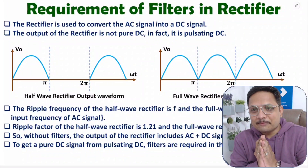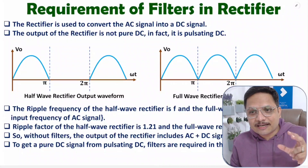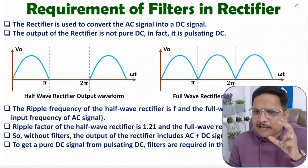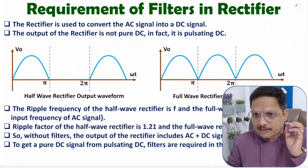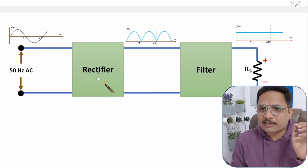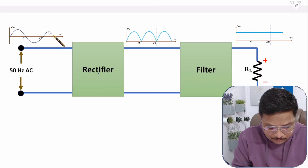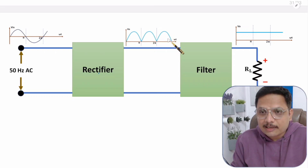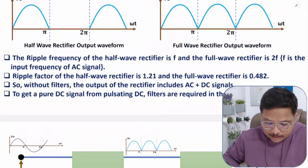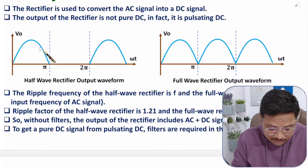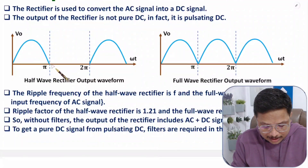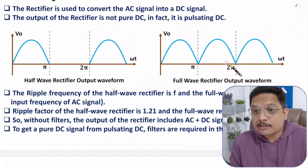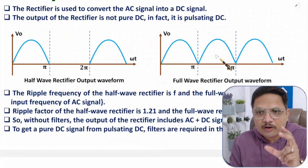Welcome to Engineering Panta Family. In this video I'll be explaining the requirement of filters in rectifiers. A rectifier's job is to convert an AC signal into a DC signal. We have seen rectifier functioning in previous videos — input is AC and output is DC — but if you observe this DC signal, it is not pure DC; it is pulsating DC.